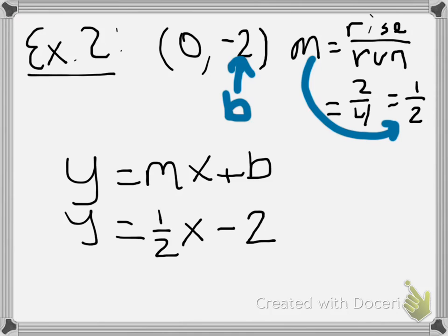Now we want to look at a second form. We want to talk about what happens if maybe we don't know the y-intercept and the slope. If we don't know that information, then we can use what's called the point-slope form.